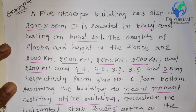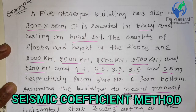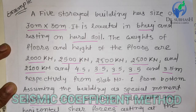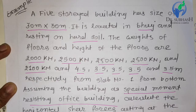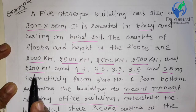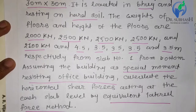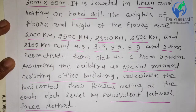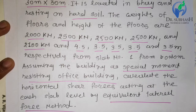In the previous lecture, we started a new problem using the seismic coefficient method. The building has 5 storeys, size 30 by 30 meters, located in Bhuj on hard soil. The floor-wise lump masses are given as 2000, 2500, 2500, 2500, and 2001. We already calculated up to VB. Today we will complete this example and then start finding the center of mass and center of stiffness, which are very important parameters when calculating earthquake-resistant buildings.